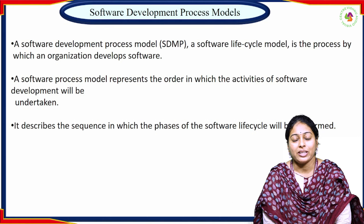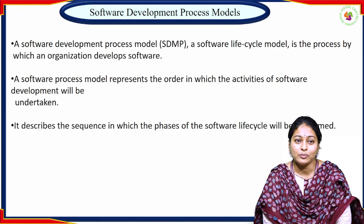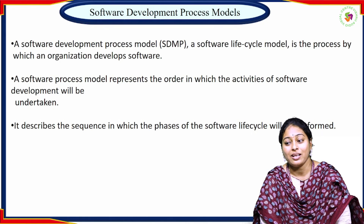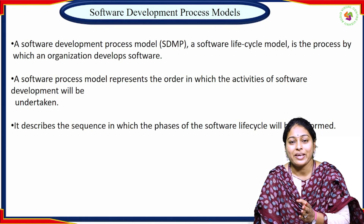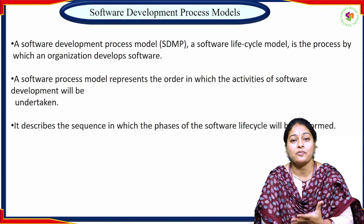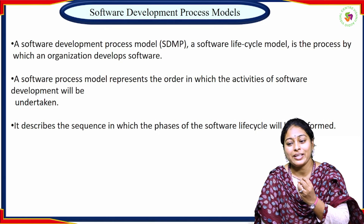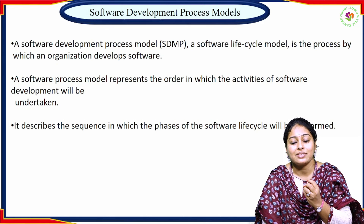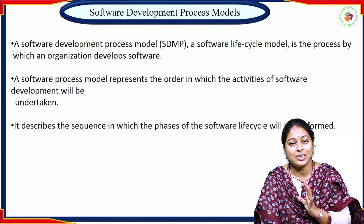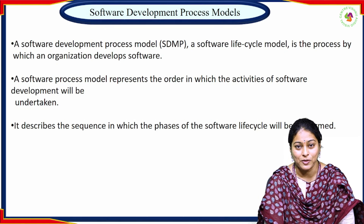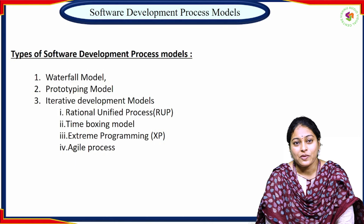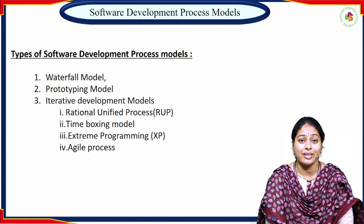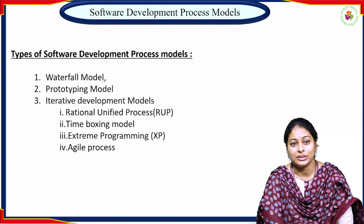For developing software, a process model is required. A software development process model is a life cycle model by which we can develop the software. The software process model represents the order in which the activities of software engineering take place. It describes the sequence in which activities are to be performed in order to develop qualitative software. Based on the requirements of the customer, we need to select the process model.